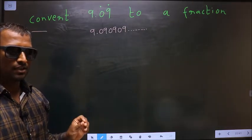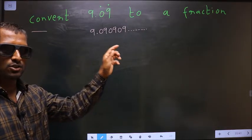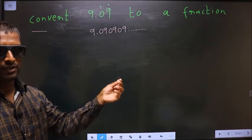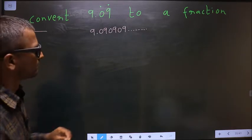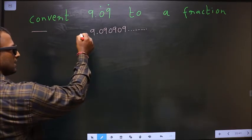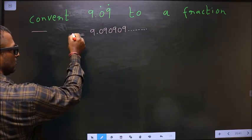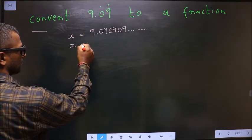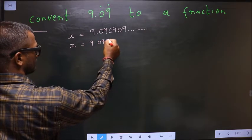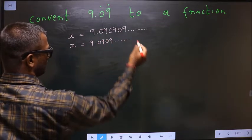Now I have to convert this to a fraction. How do I do this? First, whatever is given, take that to be X, so X equals 9.090909 and so on.